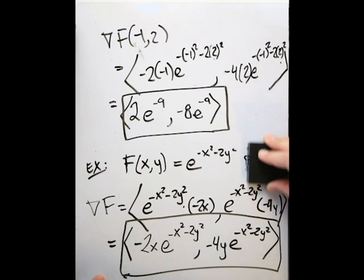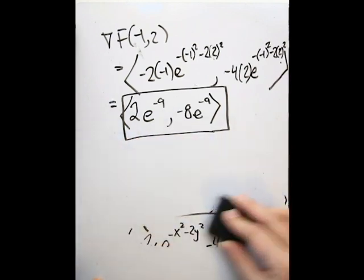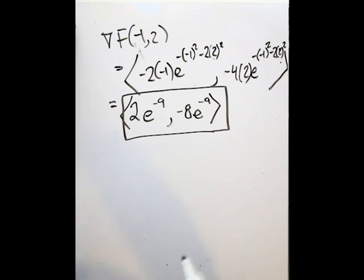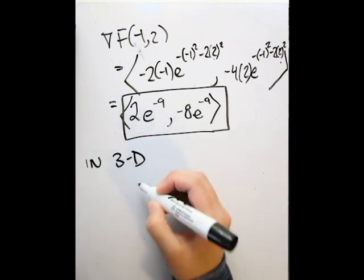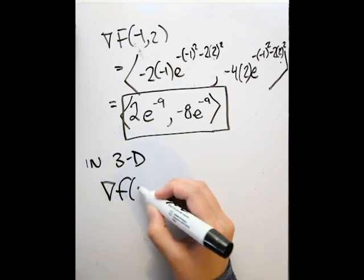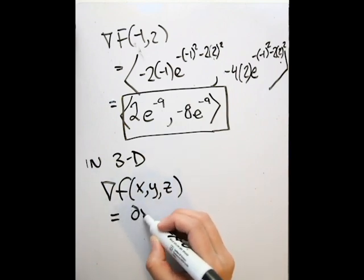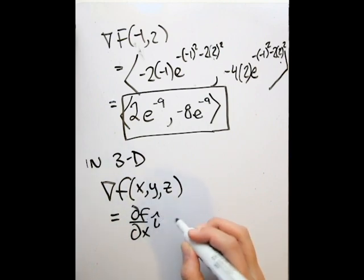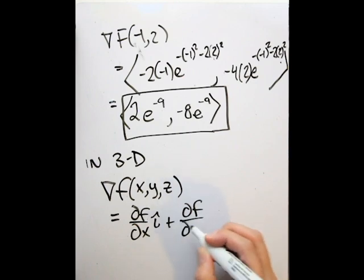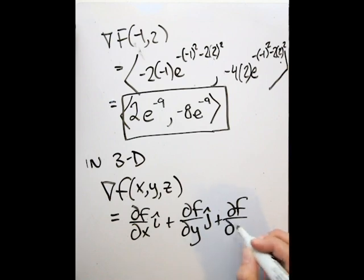The gradient in three dimensions is the same idea — just taking the partial derivatives with an added z component. In 3D, the gradient of f as a function of x, y, and z is: (∂f/∂x)i + (∂f/∂y)j + (∂f/∂z)k.